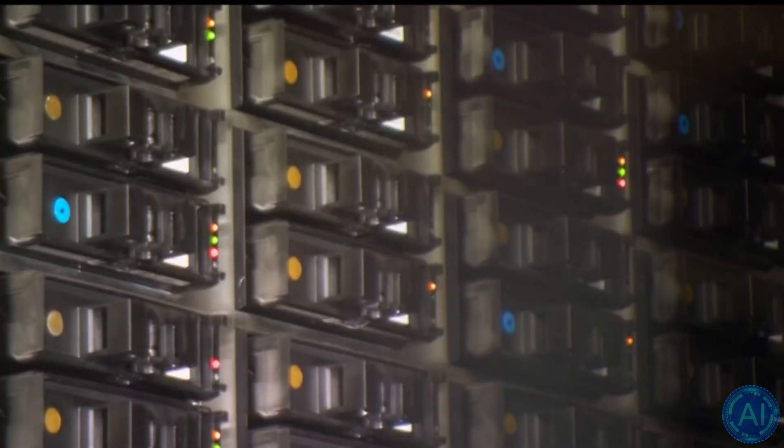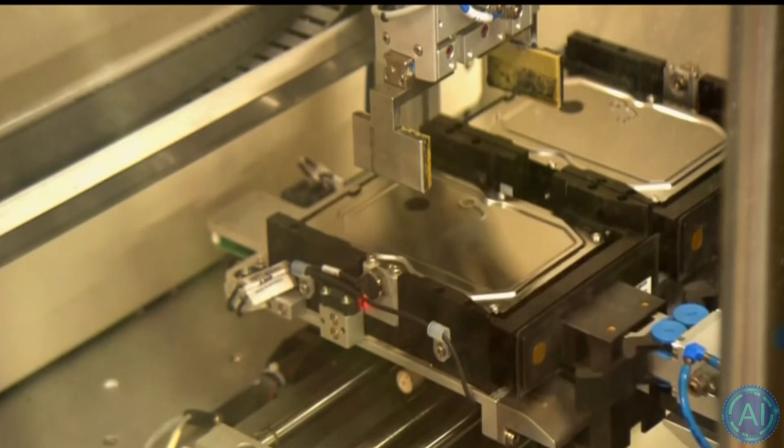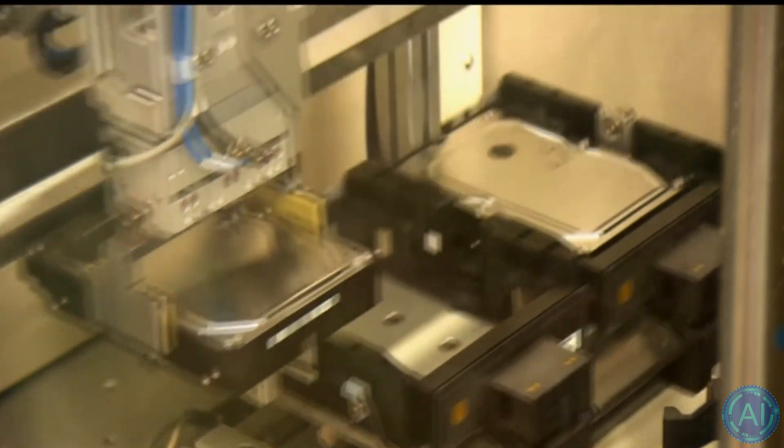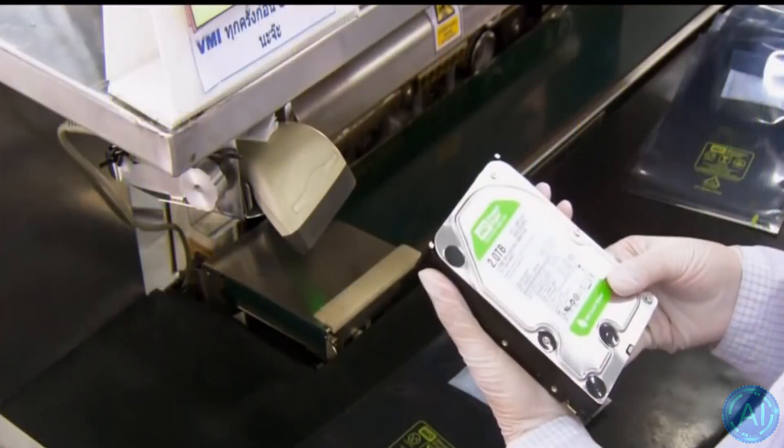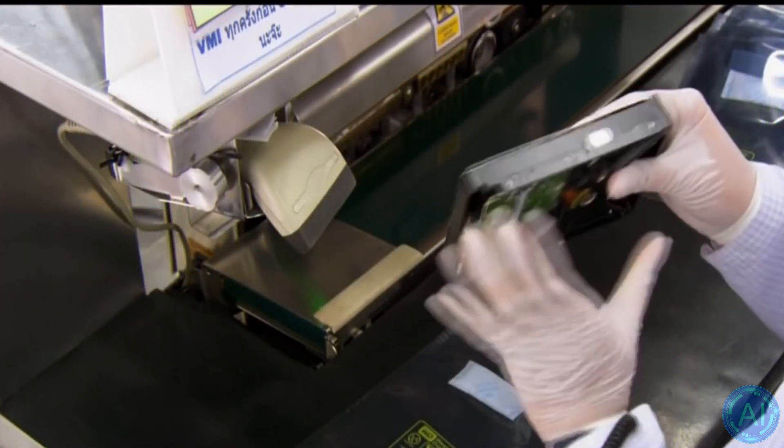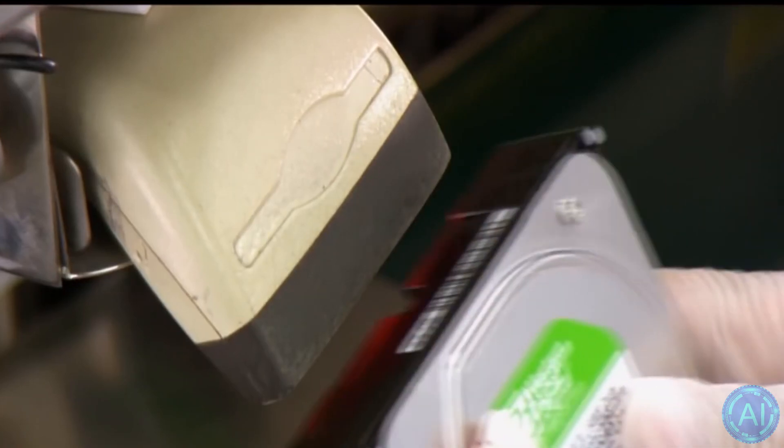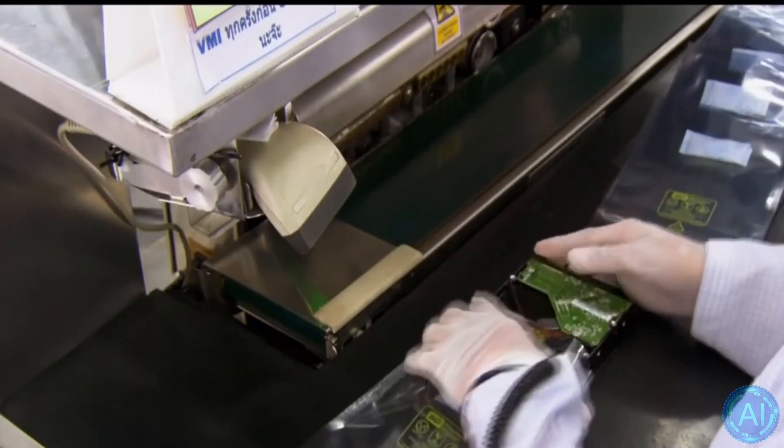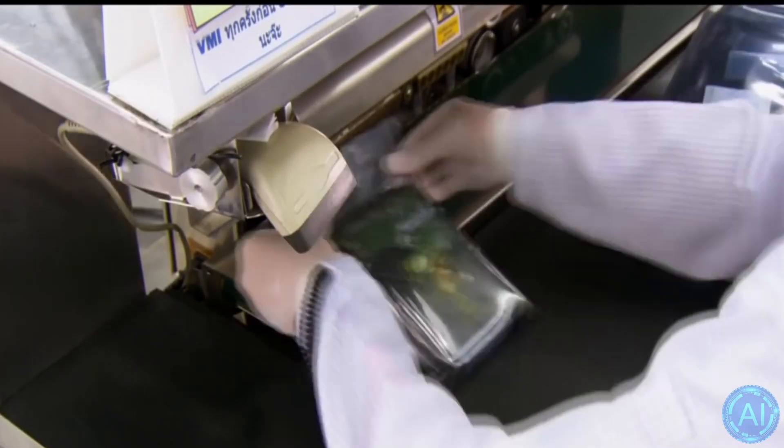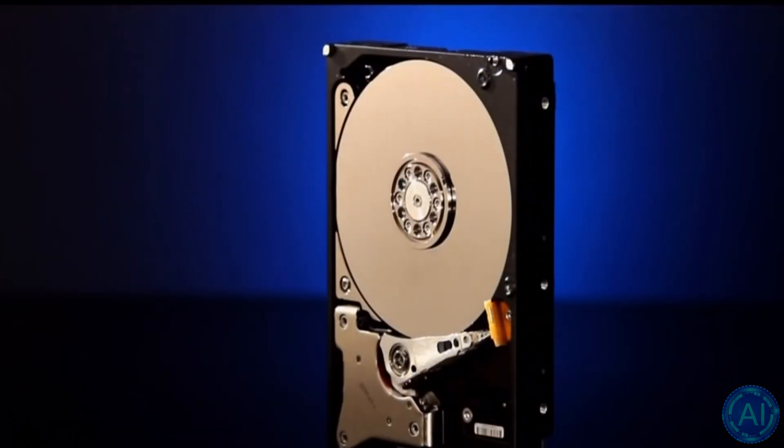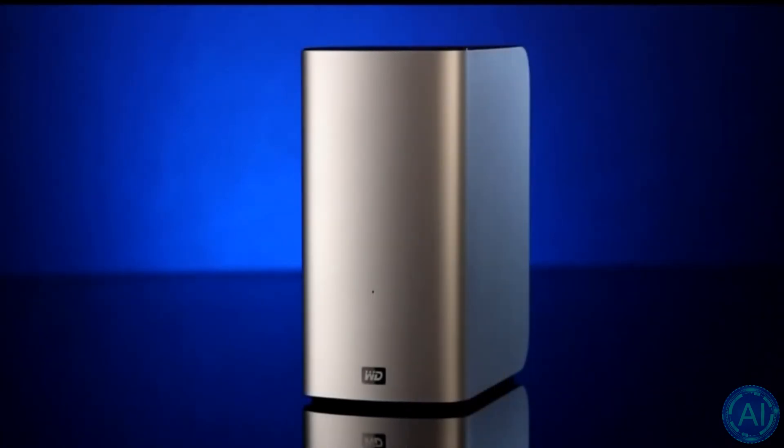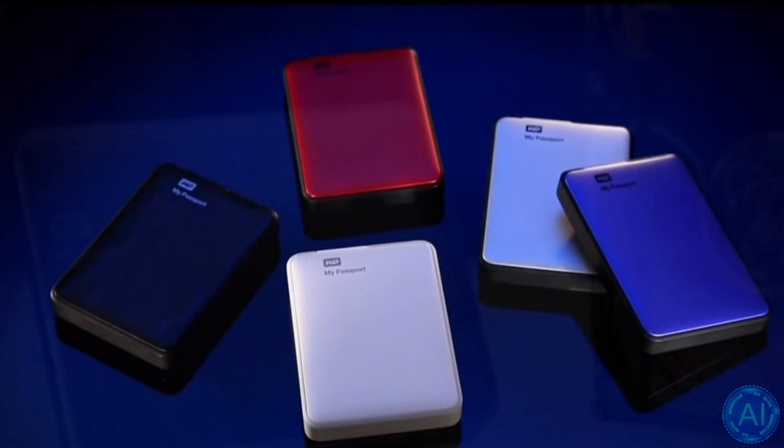Seagate plans to employ ordered granular media with a density of 5 to 7 terabytes per square inch in order to reach 105 terabytes. To go even farther, the world's leading hard disk drive manufacturer intends to employ completely bit-patterned media with an aerial density of at least 8 terabytes per square inch. Because all new forms of media will require some form of aided magnetic recording, HAMR will continue to exist in some form for many years to come.